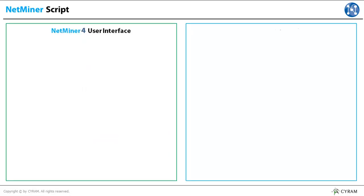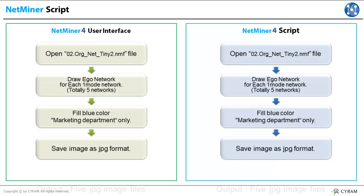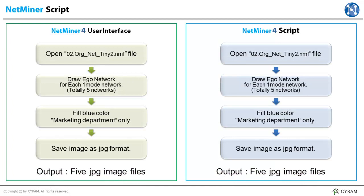What we are going to do is process the same work by using Netminer UI and Netminer script. Our goal is to draw five network maps. We will analyze Eagle Network first and color the marketing team to blue. After this demonstration, we will clearly see the effectiveness of Netminer script.